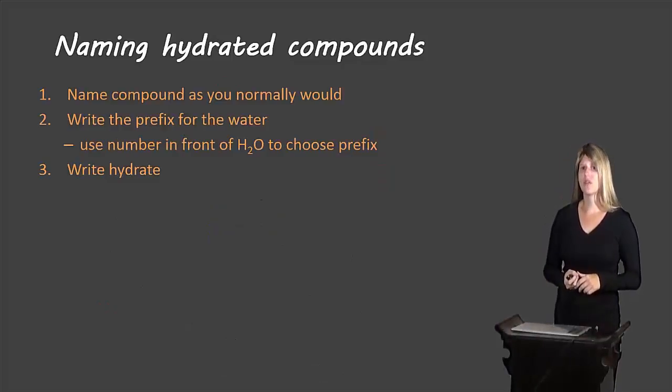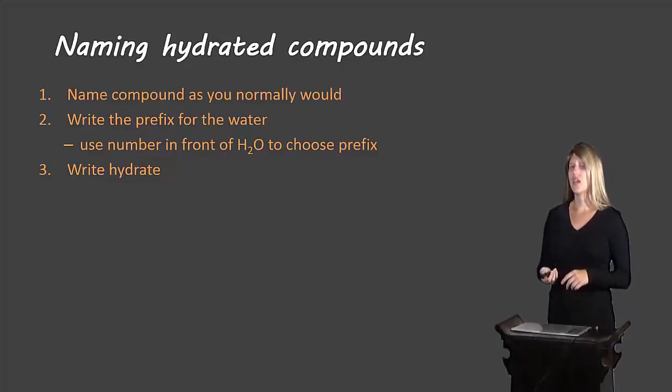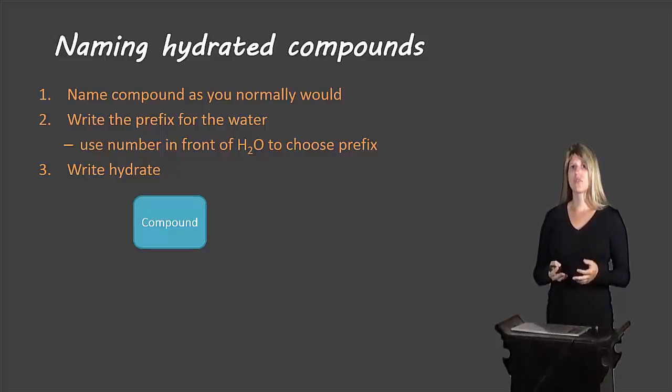So let's take a look at how we would name these types of compounds. You can pause the video and write the rules down. You'd start off by writing the name of the compound as you normally would. Now I'm not going to go through the steps for naming ionic, multivalent, polyatomic compounds. You should have already watched the videos on how to do that.